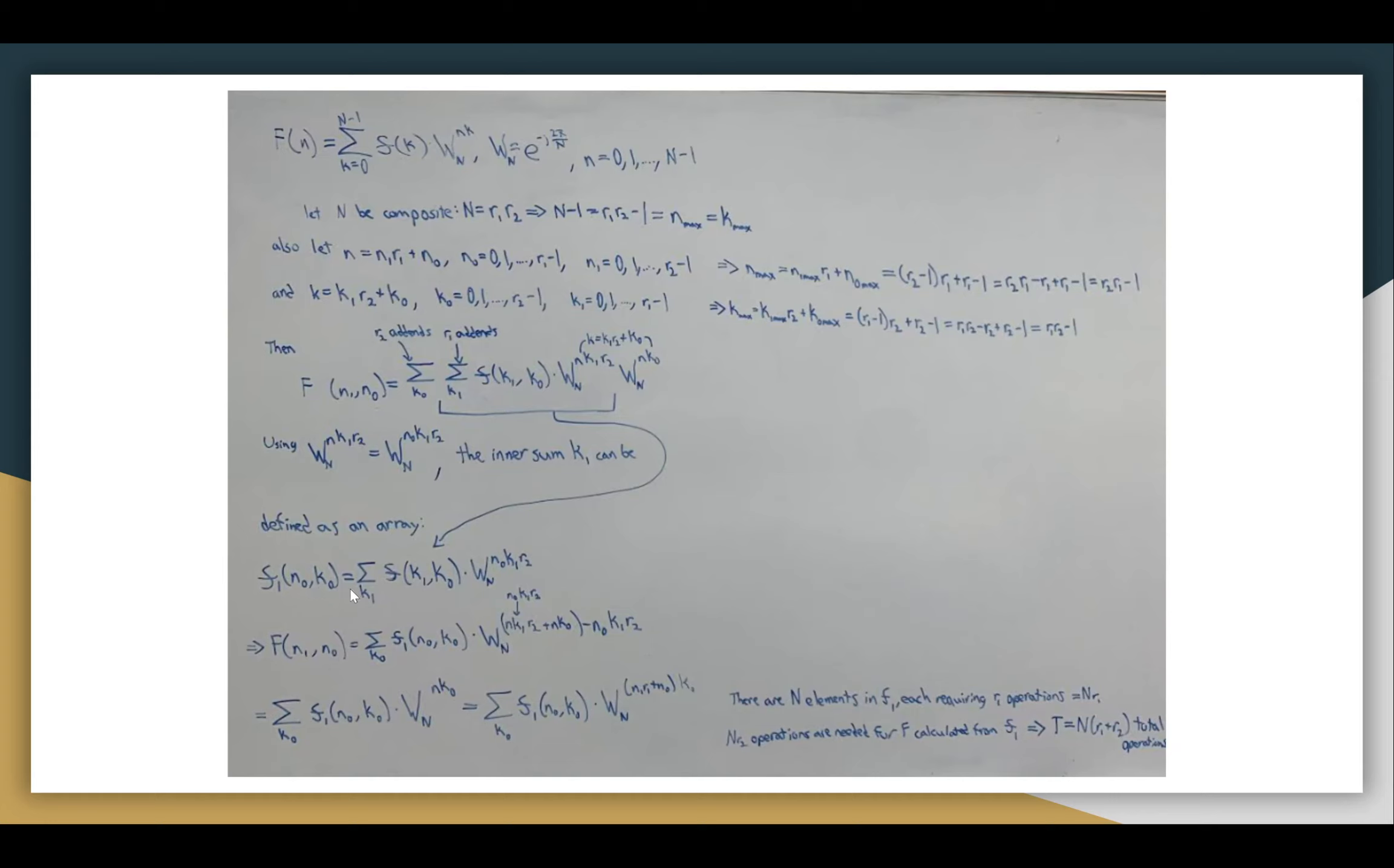With that substitution, the inner sum over K1 can be defined as an array. We can simplify this series excluding this outside W sub-n factor to be F sub-1 of n not and K0. This is just the series over K1, F K1 K0, W sub-n raised to the n not K1 R2 power.